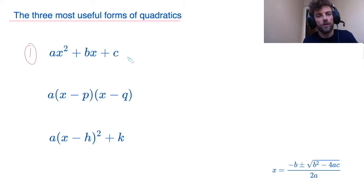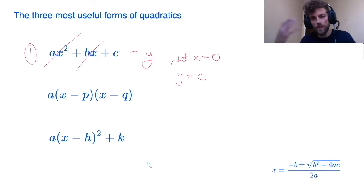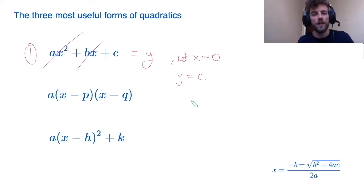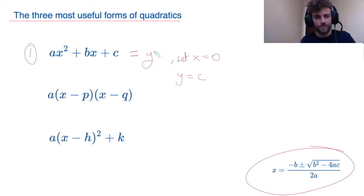Why is this form so useful? Well, if this were equal to y and I wanted to plot the graph, then if I set x equal to 0, I can immediately see that my y-intercept will be c, because if x is 0, y simply equals c. Remember, to find y-intercepts, you always set x equal to 0. The other reason this first form is useful is I can use it in the quadratic formula to solve for my roots. Roots of a quadratic equation are when I set the equation equal to 0 and I try and solve as such.